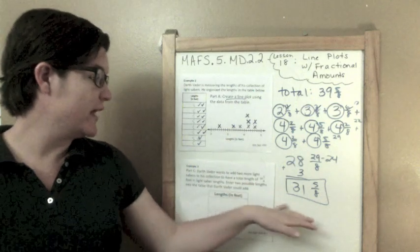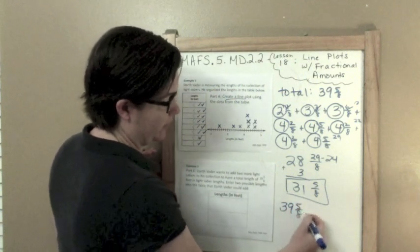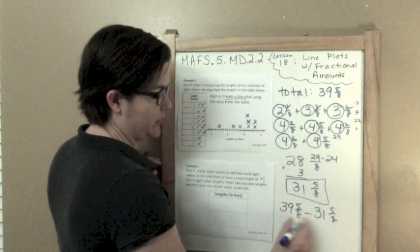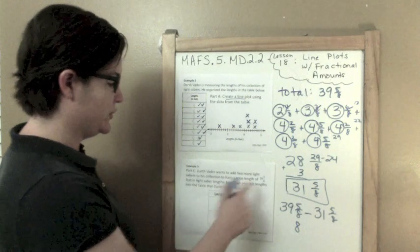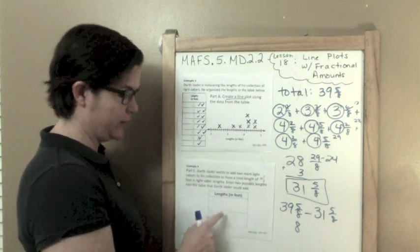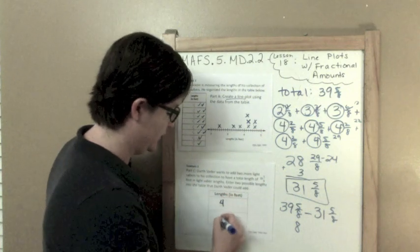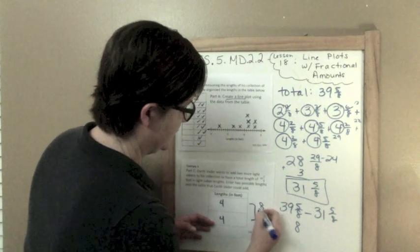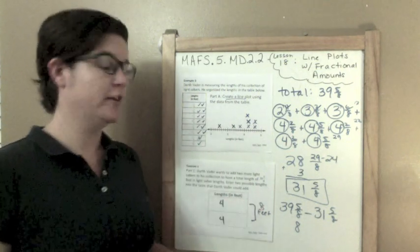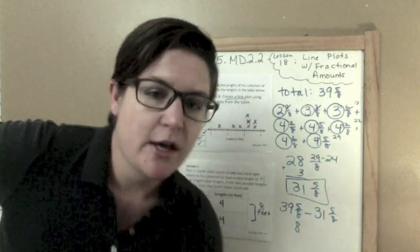But Darth Vader wants a total of 39 and 5 eighths. So I need to subtract what I'm missing. 39 and 5 eighths minus 31 and 5 eighths. Same fraction, so we're good. We're just doing 39 minus 31 which would be 8. Enter 2 possible lengths that Darth Vader could add. Well, what plus what equals 8? You could do 4 plus 4 equals 8, or 5 plus 3. I'm going to make it easy and write 4 plus 4. But anything in here that equals 8 feet when you add them together would work.